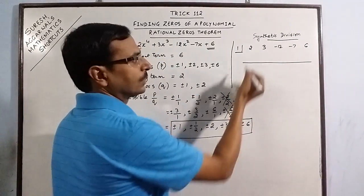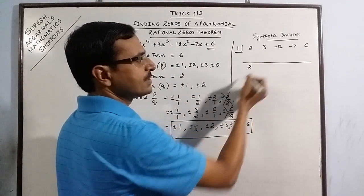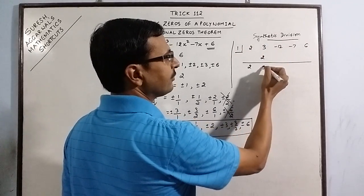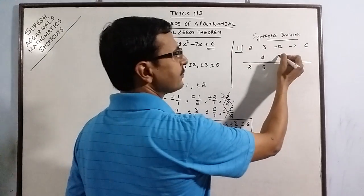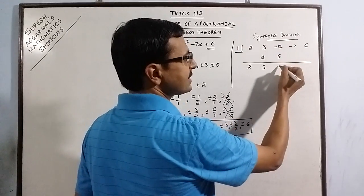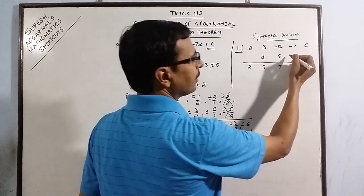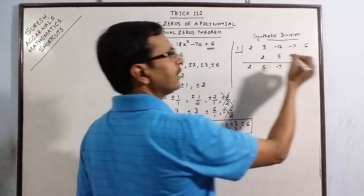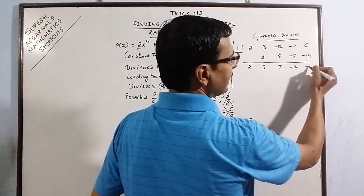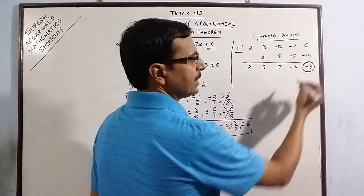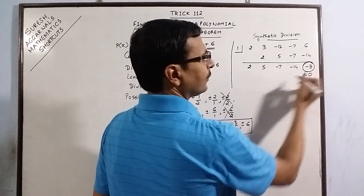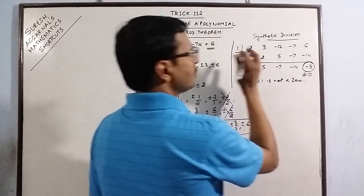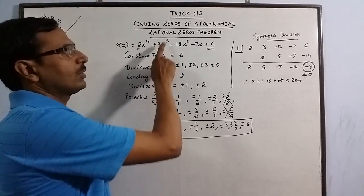Continuing the synthetic division for x=1: −7 into 1 gives −7; −7 minus 7 is −14. −14 into 1 gives −14; 6 plus (−14) gives −8. The last term is not equal to 0, therefore x=1 is not a zero of this polynomial.